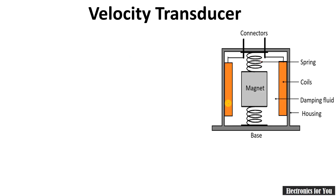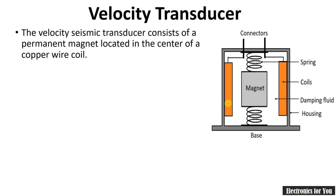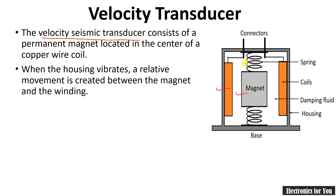Now let's see the velocity transducer, also known as the velocity seismic transducer. This transducer consists of a magnet and a coil around the magnet. The magnet is installed on a spring. The working principle of the velocity transducer is based on Faraday's law of electromagnetic induction, because this construction is generally used for generators.